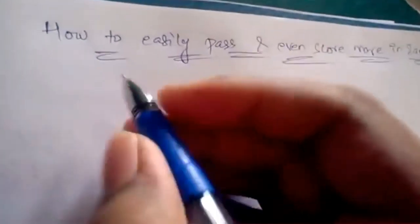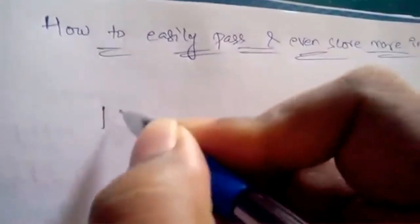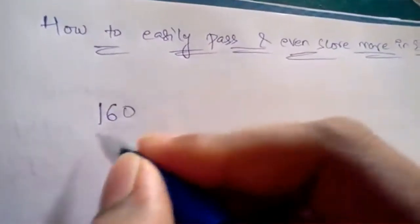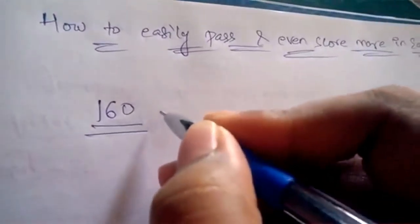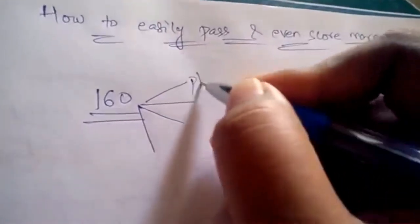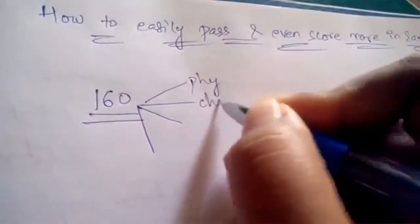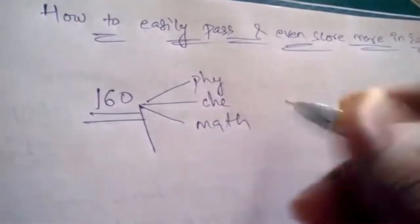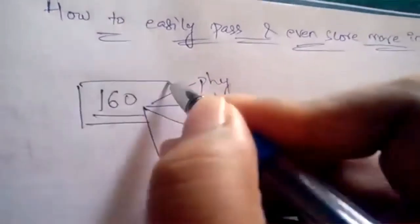Let's start. Generally, coming to the MSET question paper, there will be 160 marks and questions from four different subjects like physics, chemistry, maths, etc. So here there is a technique.